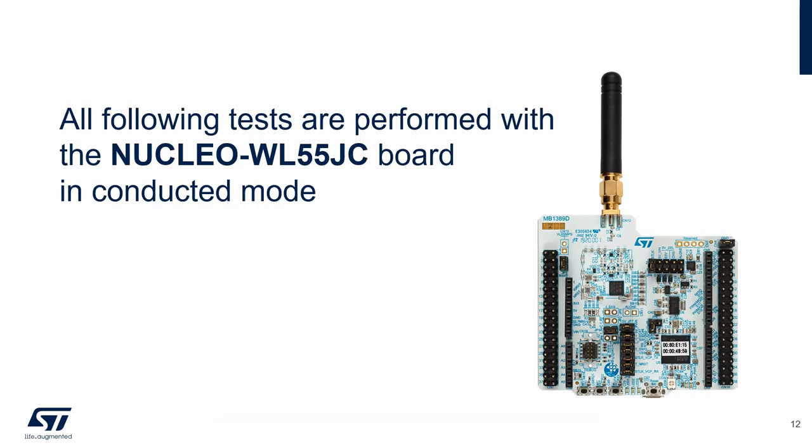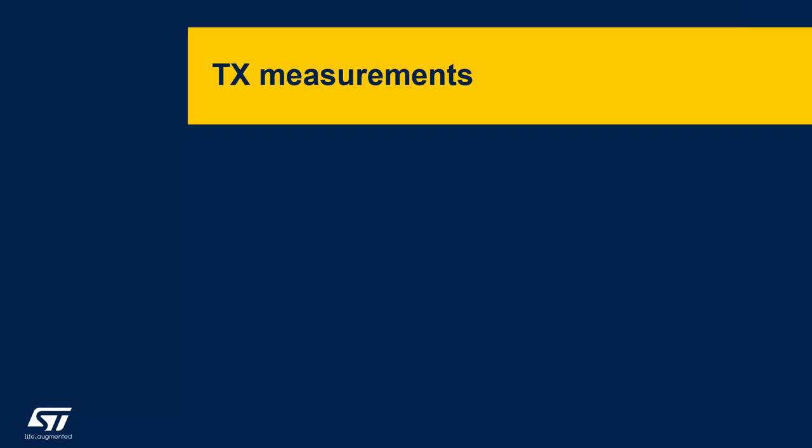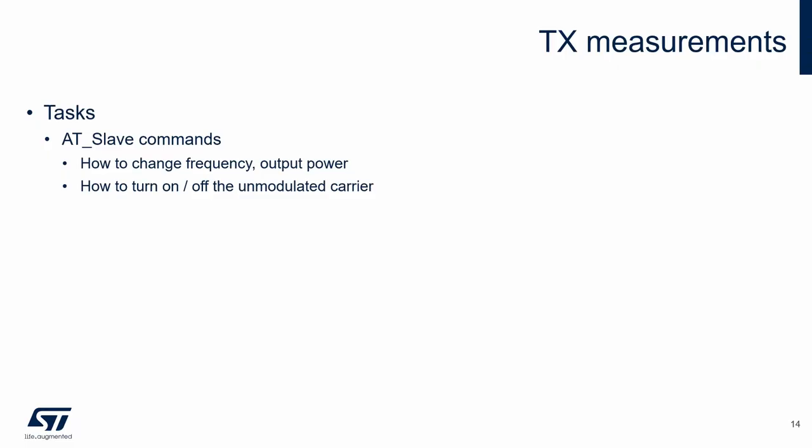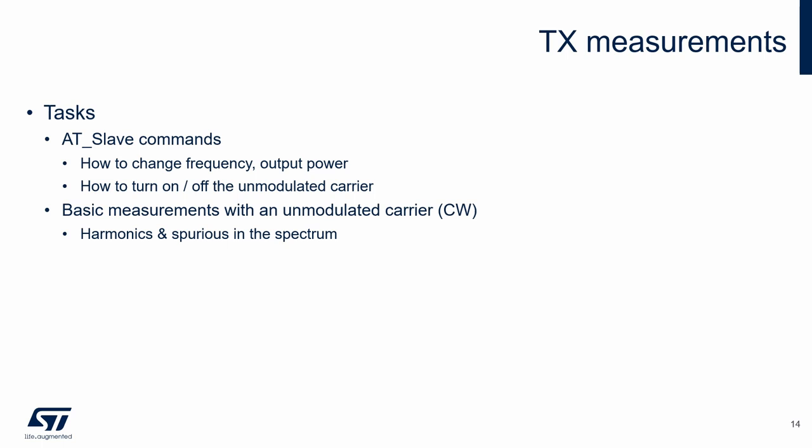All following tests of the transmitter and receiver are performed with a Nucleo board in conducted mode. In this chapter, we take a closer look at the AT Slave commands for changing the frequency and output power, and how to turn on and off the unmodulated carrier. These are the most basic operations for transmitter testing. Using the AT Slave commands, we will show basic measurement of the transmitter spectrum, checking for harmonic or spurious components.